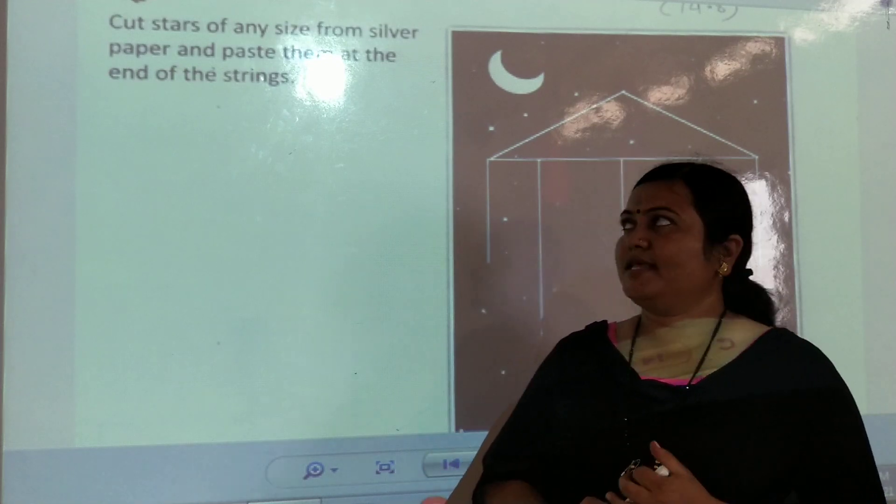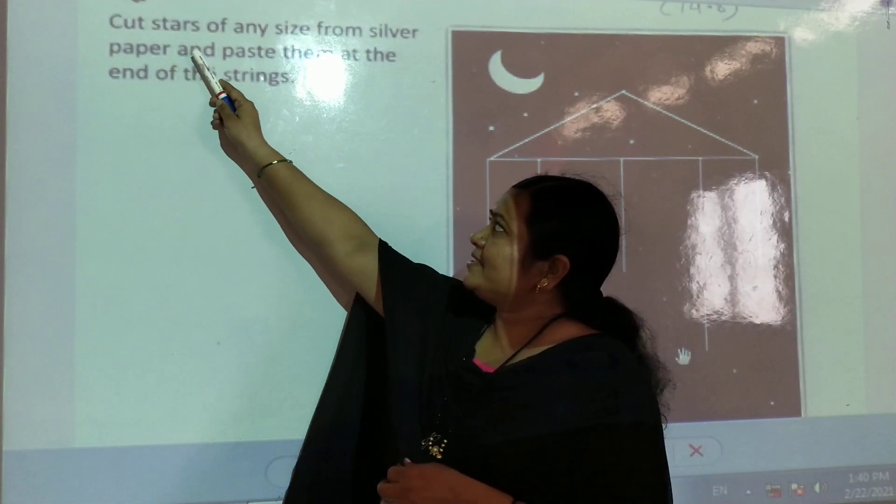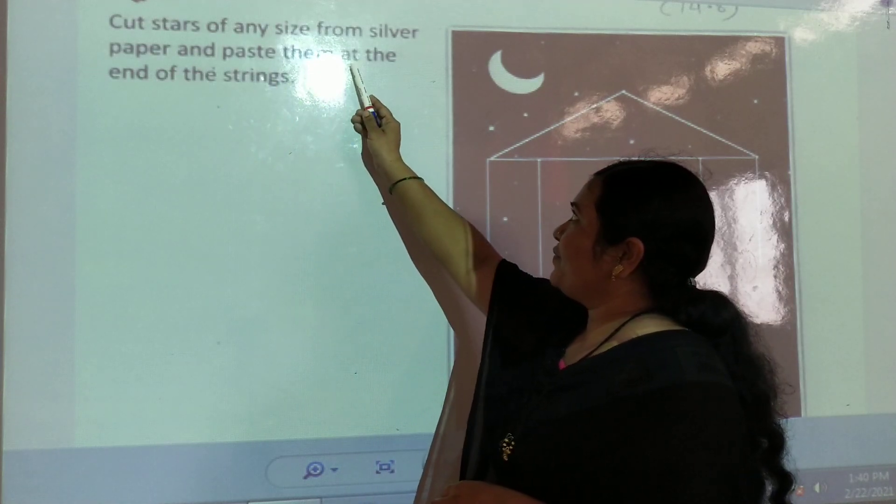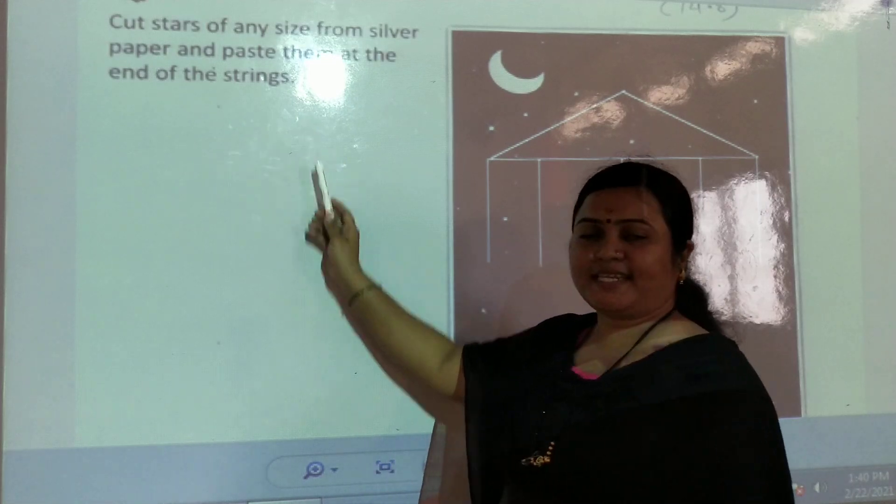Listen carefully. Here is Fun with Dabby. Cut stars of any size from silver paper and paste them at the end of the strings.